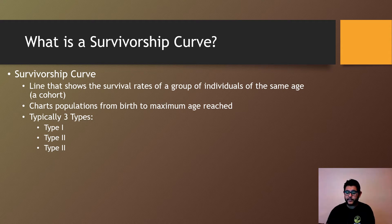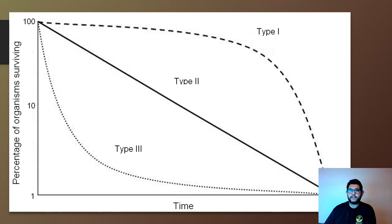So this is your typical general survivorship curve. Now one thing I want you to see is a lot of the times on the side on the left, you'll see that there's a mark of percentage. But sometimes you'll see this as a logarithmic scale. The main idea to understand is to see that it's showing you how long species survive.